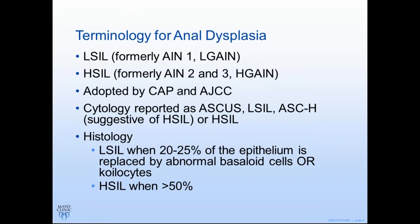The newly adopted terms by the College of American Pathology and the AJCC are low-grade squamous intraepithelial lesion and high-grade squamous intraepithelial lesion — LSIL and HSIL are the formal terms we should be using. Looking at cytology, there are four potential categories in addition to normal: ASCUS, LSIL, suggestive of HSIL, or frank HSIL. On histology from biopsies, it's considered LSIL when about 20-25% of the epithelium is replaced by basaloid cells or koilocytes, and HSIL when more than 50% of the epithelium is replaced.